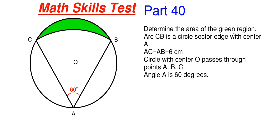So this will be our 40th part in this math scale series. What we have going on here is we have to determine the area of the green region shown inside this circle. We are told that arc CB is the circle edge with a center of A, so we have a circle continuing outside with center A. A to C and A to B are equal at 6 centimeters. The circle that goes around this entire thing has a center of O, and A, B, and C are aligned along the edge of circle O. We are also told that angle A is 60 degrees.